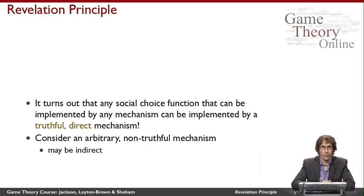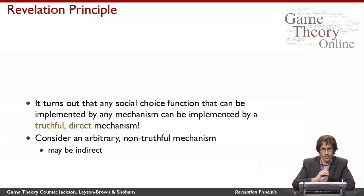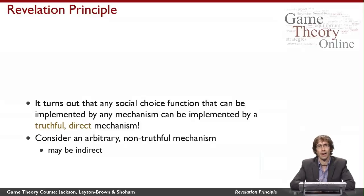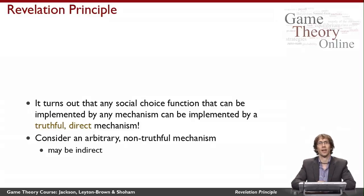A direct mechanism is truthful if the equilibrium strategy for every agent — when they have to write something down on that piece of paper — is just to write down all of their private information, to simply declare what their type is. So a truthful mechanism gives agents the very easiest strategic problem they can have: agents are asked to write something down, and they say, 'All right, I'll reveal everything to you on the piece of paper, and you go off and make a decision based on that.'